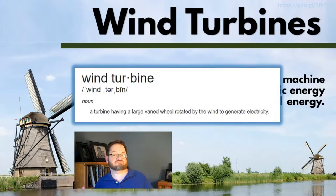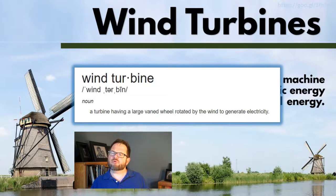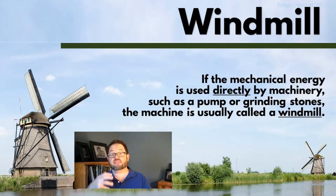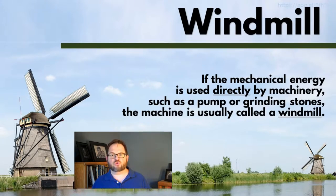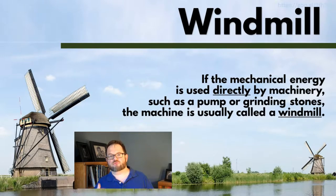If you go to Google and type 'define wind turbine,' you get that it's a turbine having a large veined wheel rotated by the wind to generate electricity. Strictly speaking, if you're taking the mechanical energy and using it directly by machinery — such as a pump to move water, grinding stones to grind grain, or to saw wood — that's a windmill. A windmill doesn't bother converting the mechanical energy of the rotating shaft into electricity; it uses the mechanical energy itself right there on site.